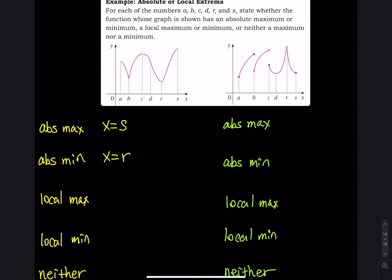For local max, we look for the top of the hill, which is at x equals c. For local minimum — the bottom of the hill — we have x equals r, and also x equals b.